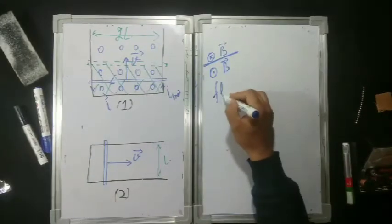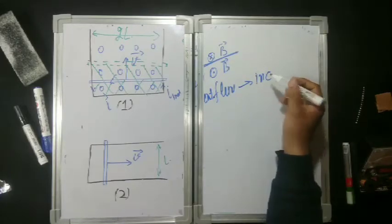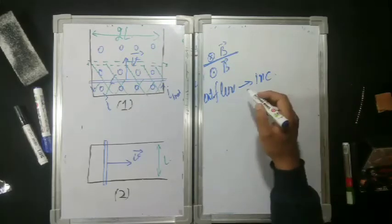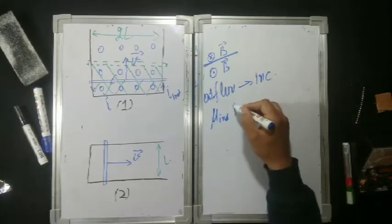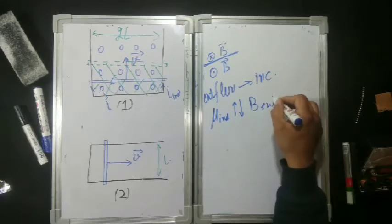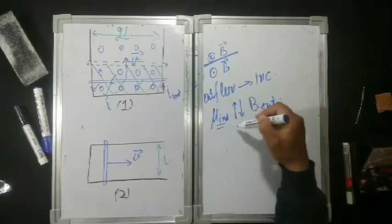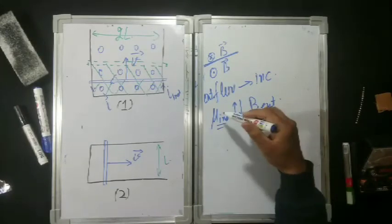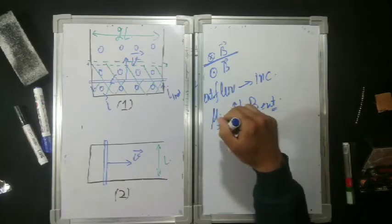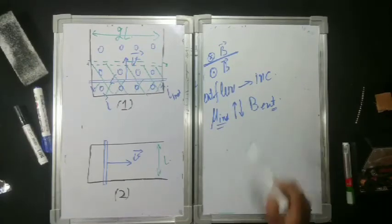For circuit 1, the external flux is increasing. By Lenz's Law, if external flux is increasing, the induced dipole moment will be in the opposite sense to the external field — anti-parallel. So whatever the direction of the induced dipole moment, the external magnetic field will be in the opposite direction. Since we are told the current direction, we can find the induced dipole moment direction.